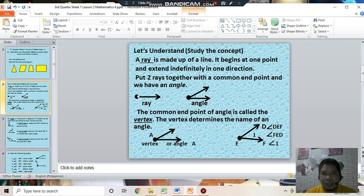The common endpoint of an angle is called the vertex. The vertex determines the name of an angle. For example, vertex A or angle A. In this illustration at the right, we are going to name this illustration or we are going to name three angles, three ways to name angles.